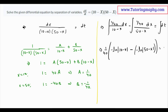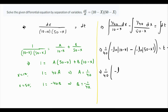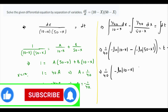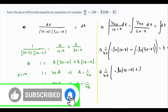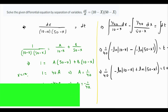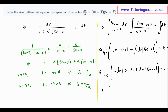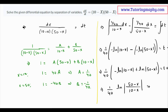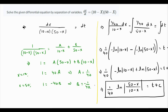This equals t plus C. So we have 1 over 40 times: minus natural log of (10 minus x), and minus and minus becomes plus, so plus natural log of (50 minus x), equals t plus C. Using the log property that log A minus log B equals log(A/B), this condenses to log of (50 minus x) over (10 minus x) equals t plus C. That is the final answer.